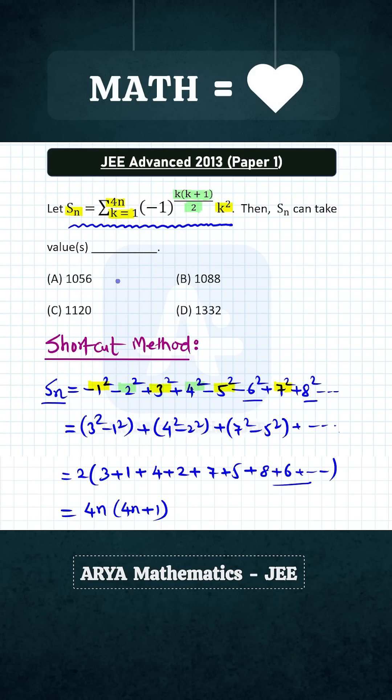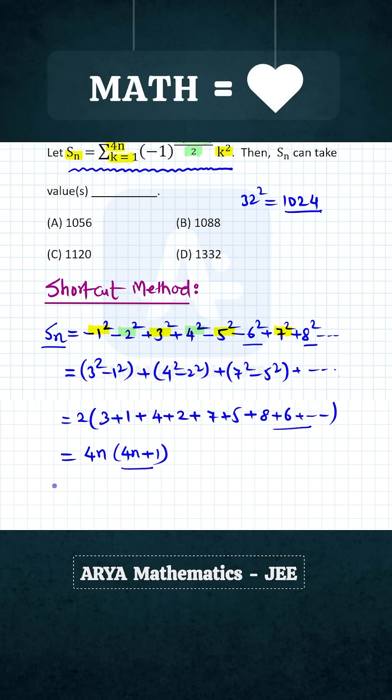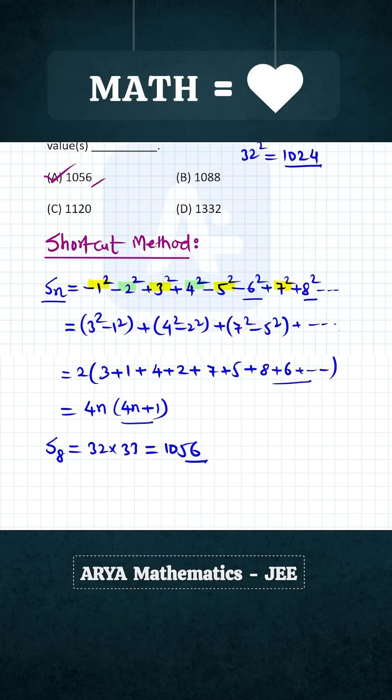Now, you can see that all of these options are close to 1000, and you can recall that 32² is 1024. So if we calculate sum of first 8 terms, then you will get 1056. Now in place of n, if you substitute 9, then you will get S9. Therefore, the right answer for this problem will be option A and D.